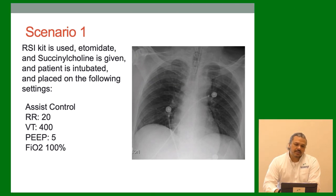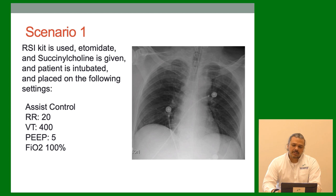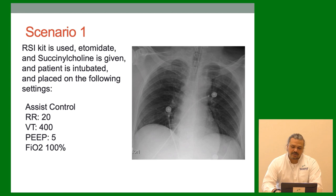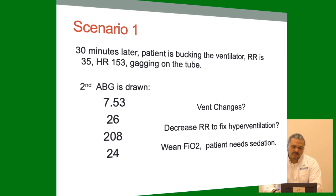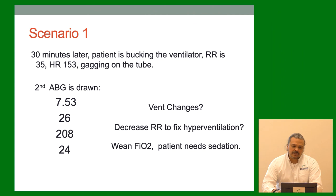RSI kit is used. Etomidate and SUX are given. Patient is intubated and placed on vent settings. X-ray looks a lot better — looks like he needed some positive pressure. Thirty minutes later, patient is bucking the ventilator, respiratory rate 35, heart rate 153, gagging on the tube. Second ABG is drawn: 7.53 / 26 / 208 / 24.